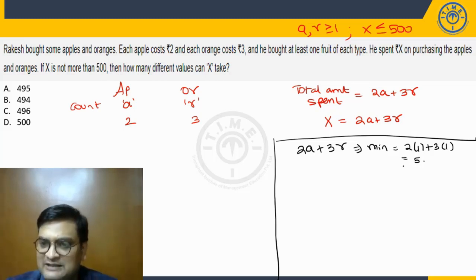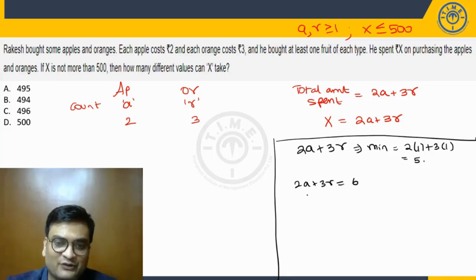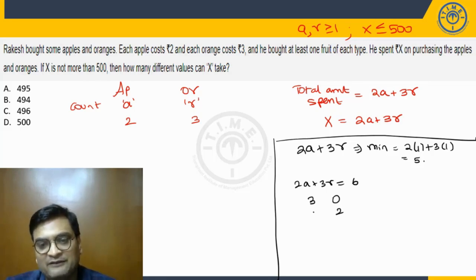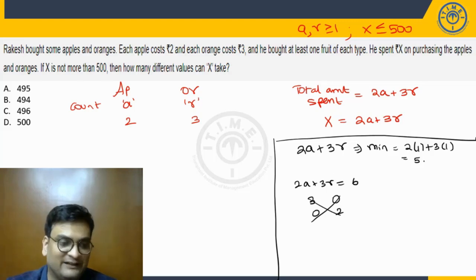So if I just go one step higher than minimum value, let's say 6. So 2A plus 3R equal to 6. What will be the solutions here? The solution will be A equal to 3, R equal to 0, or R equal to 2 and A equal to 0. Now both will not be acceptable because both are greater than or equal to 1. So that means this expression here cannot take the value of 6.